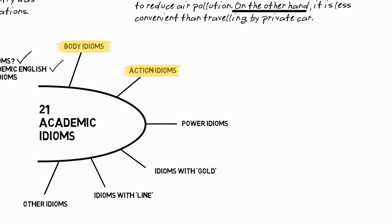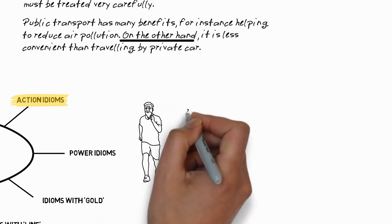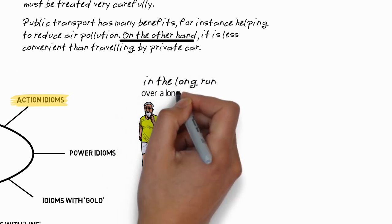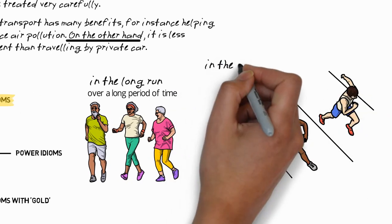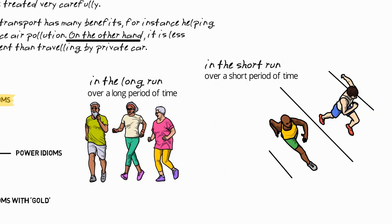Next, let's move on to action idioms. So the first of these is in the long run, which means over a long period of time, and the second is its opposite, in the short run, which means over a short period of time.